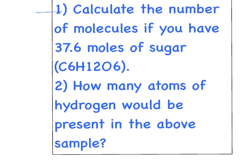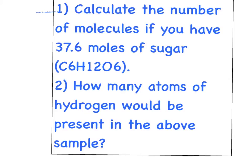To help us do that, we are going to solve this question right here. The question has two parts. The first part is calculate the number of molecules if you have 37.6 moles of sugar. And the second part of the question is once you have the number of molecules, calculate the number of atoms in the sample.